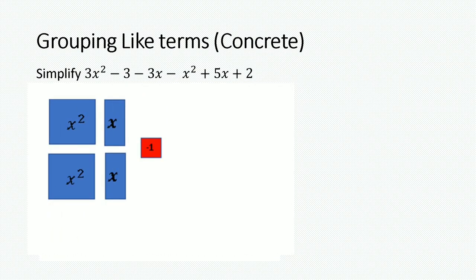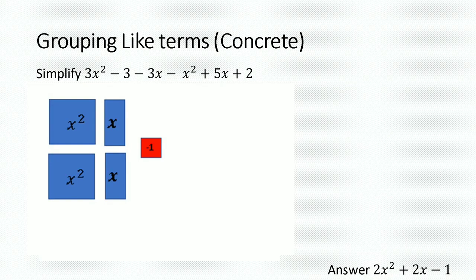Once we have removed the nullifiers, our answer is right at hand. Our answer would be 2x squared plus 2x minus 1.